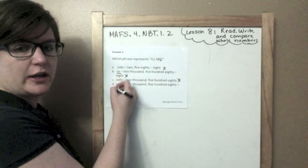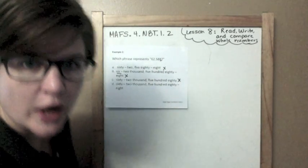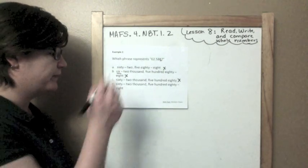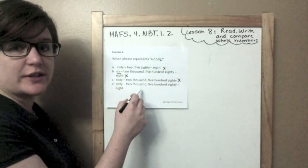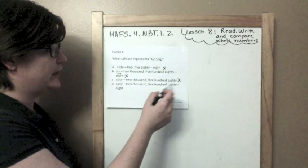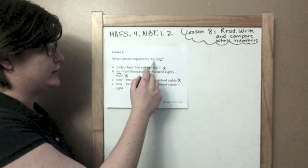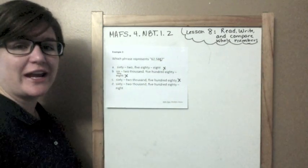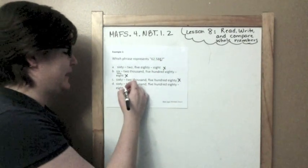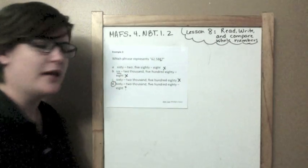So, it must be D, so I'll pick it, right? No. No. You've got to read the whole thing. 62,588. Let me check. 62,588. 62,588. That is my answer. Circle it. Yes.